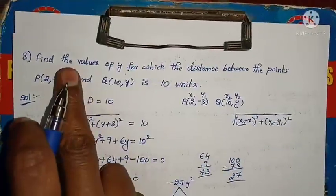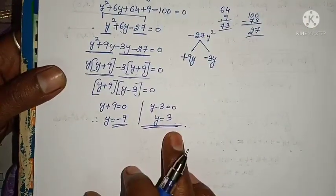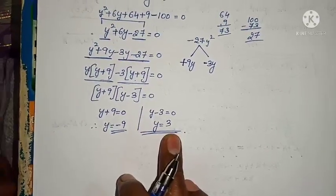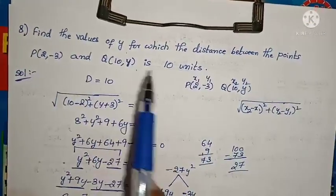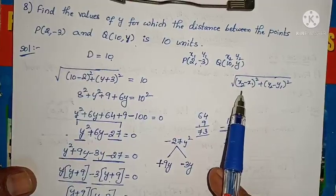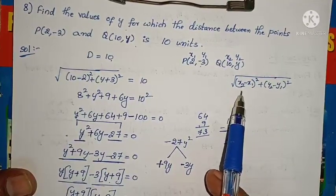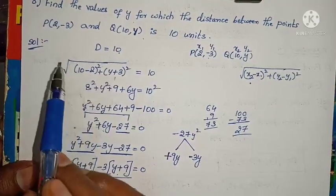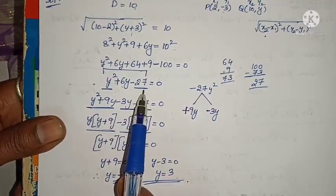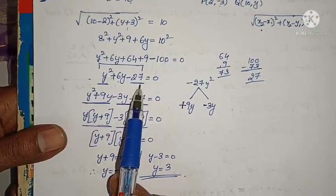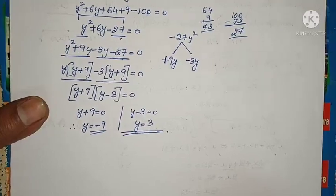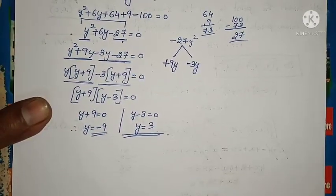Find the values of y — we got the values. y equals minus 9 or y equals 3. How we have done: they gave two points and the distance value of 10 units. We know the distance formula and substituted. Sending the root to the other side gives a square — we got a quadratic equation. Solved by factoring — very easy and very simple.